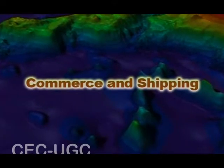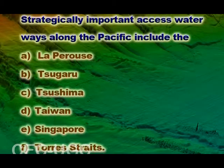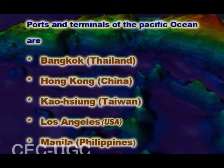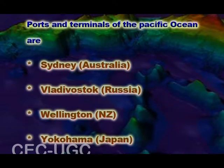The commerce and shipping of the Pacific Ocean is yet another feature to study. Strategically important access waterways along the Pacific include the La Pérouse, Sugaru, Tsushima, Taiwan, Singapore, and Torres Straits. The Pacific Ocean has been a highway for trade since people built the first ships thousands of years ago. Ports and terminals of the Pacific Ocean include Bangkok in Thailand, Hong Kong in China, Kaohsiung in Taiwan, Los Angeles and San Francisco and Seattle in the US, Manila in the Philippines, Pusan in South Korea, Shanghai in China, Singapore, Sydney in Australia, Vladivostok in Russia, Wellington in New Zealand, and Yokohama in Japan.